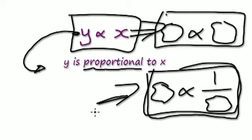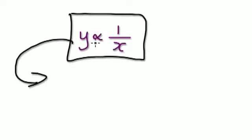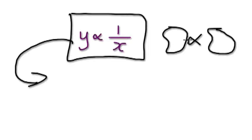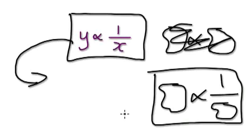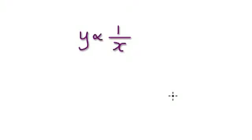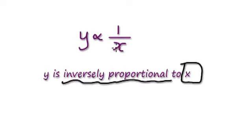So this here would be proportional, and this here would be inversely proportional. Next example. Given this here, how would you express this in words? Well, you can see that this is not of the direct proportional type — it is of the one-over-something type. So it's going to be an inversely proportional relationship. So Y is inversely proportional to X.